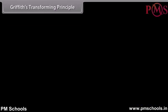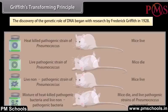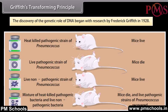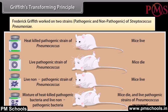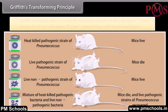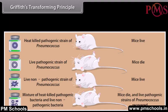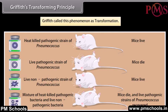Griffith's Transforming Principle. The discovery of the genetic role of DNA began with research by Frederick Griffith in 1928. Griffith worked on two strains — pathogenic and non-pathogenic — of Streptococcus pneumoniae. He found that when he mixed the heat-killed remains of the pathogenic S strain with living cells of the non-pathogenic R strain, some of these cells became pathogenic. Griffith called this phenomenon transformation.